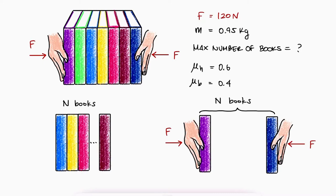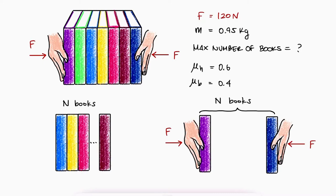In the first case we have the weight of N books, the compressive force from the adjacent books on both sides and with the maximum number of books, the maximum friction mu times N going up.